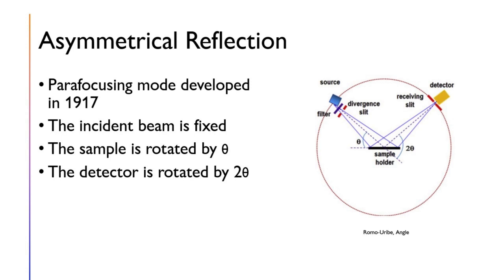In asymmetrical reflection, we have a parafocusing mode which was developed in 1917. Here, the incident beam is fixed, while the sample and the detector are both rotated. The sample is only rotated by θ, while the detector is rotated by 2θ, as seen in the image.